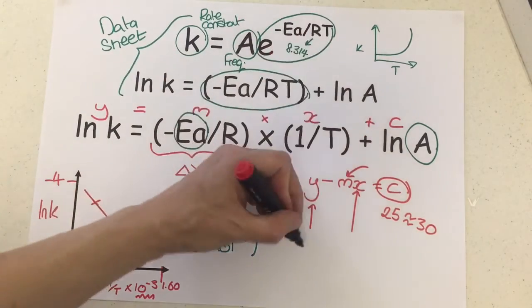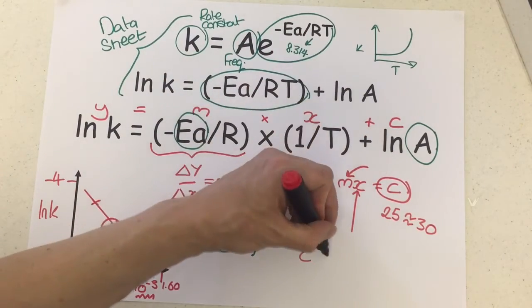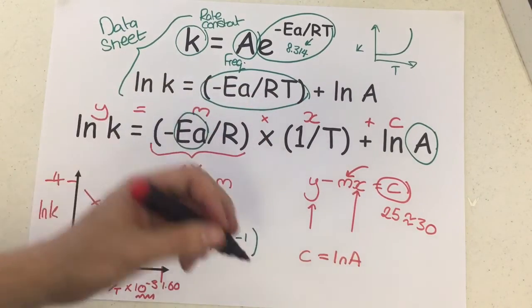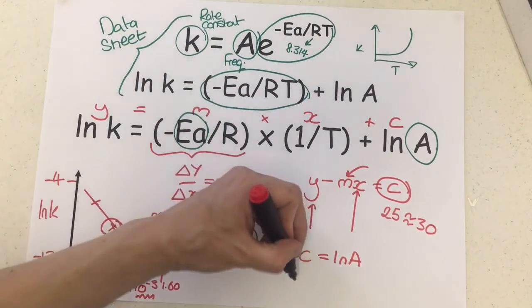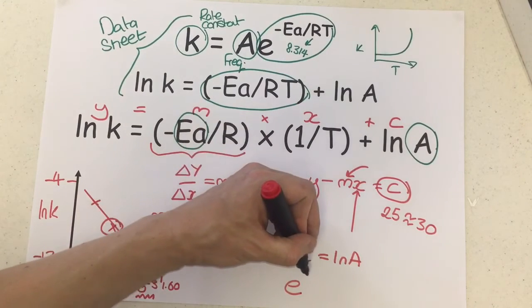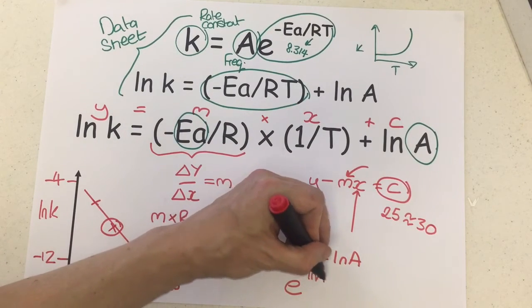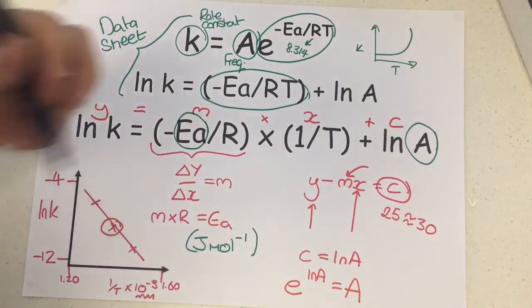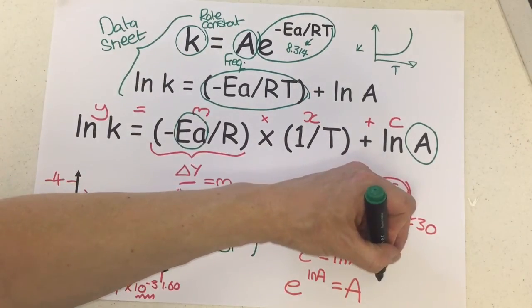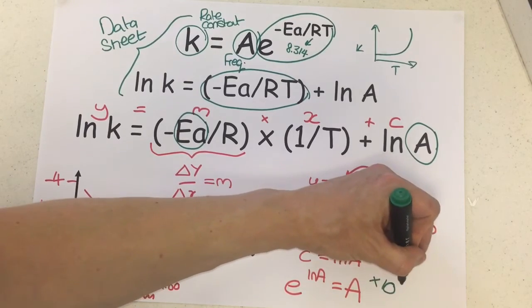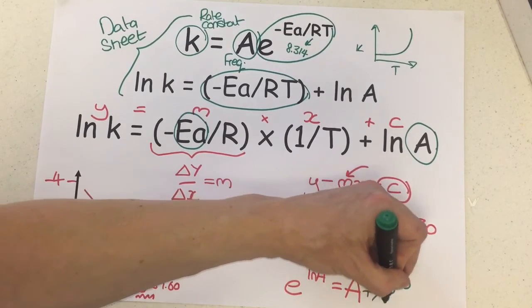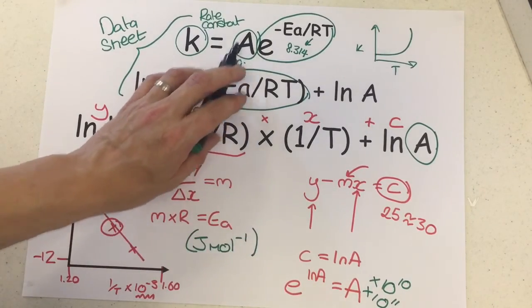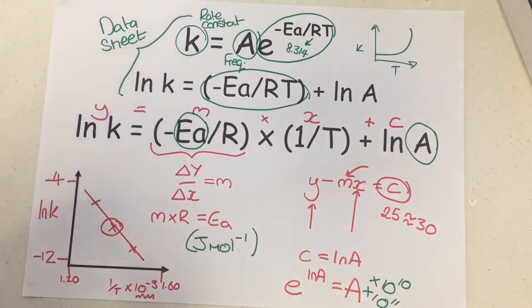Now then, what does that actually give you? Well, c remember is actually ln of A, and so you need to do the inverse function of the natural log, which is an exponential. So you need to do exponential of ln A, and it will give you an A quantity. That A quantity is really easy to spot because you're going to get a number that's like times 10 to the power of 10 or times 10 to the power of 11, which is normal really because it's the number of collisions, so you'd expect that to be a big value for a chemical reaction.